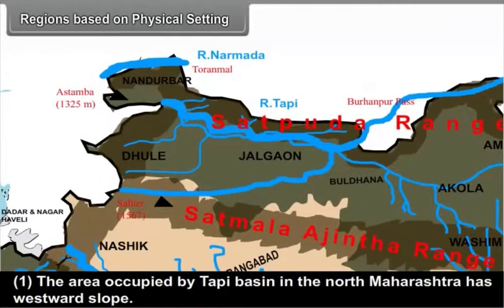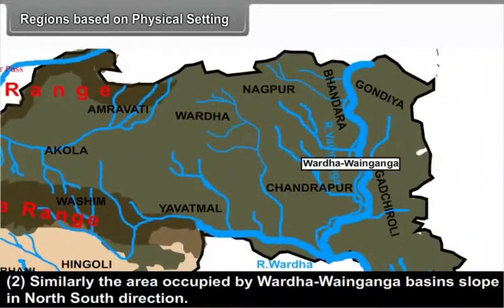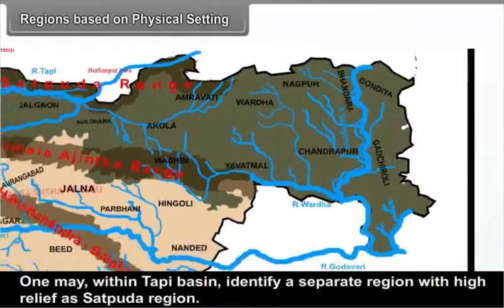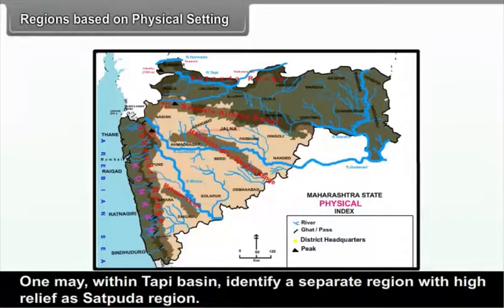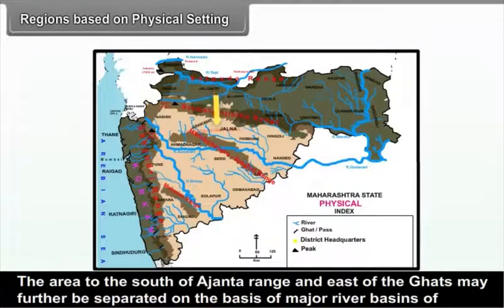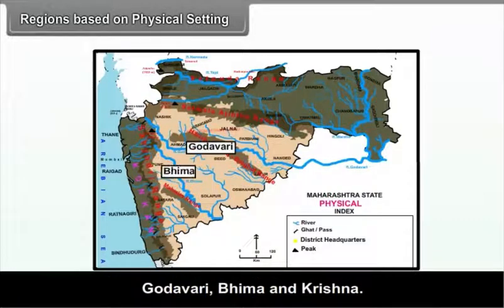We can identify three distinct regions on the basis of direction of slope. Number one: the area occupied by the Tapi basin in north Maharashtra has westward slope. Number two: similarly, the area occupied by Wardha-Wainganga basins slopes in the north-south direction. Number three: the rest of the plateau area has eastward slope. Within the Tapi basin, we can identify a separate region with high relief — the Satpuda region, seen along the northern boundary of the state. The area to the south of the Ajanta range and east of the Ghats may further be separated on the basis of major river basins of Godavari, Bhima and Krishna.